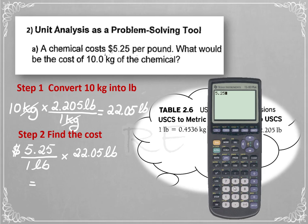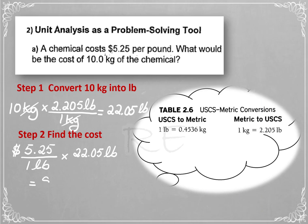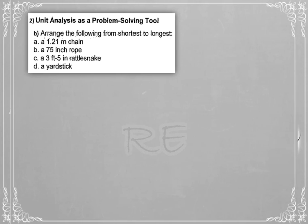5.25 multiplied by 22.05. The answer is $115.76.